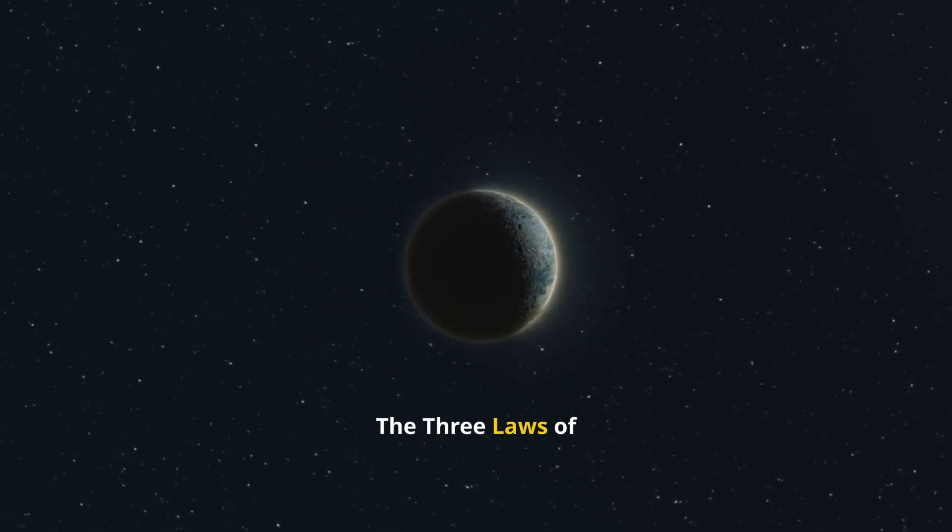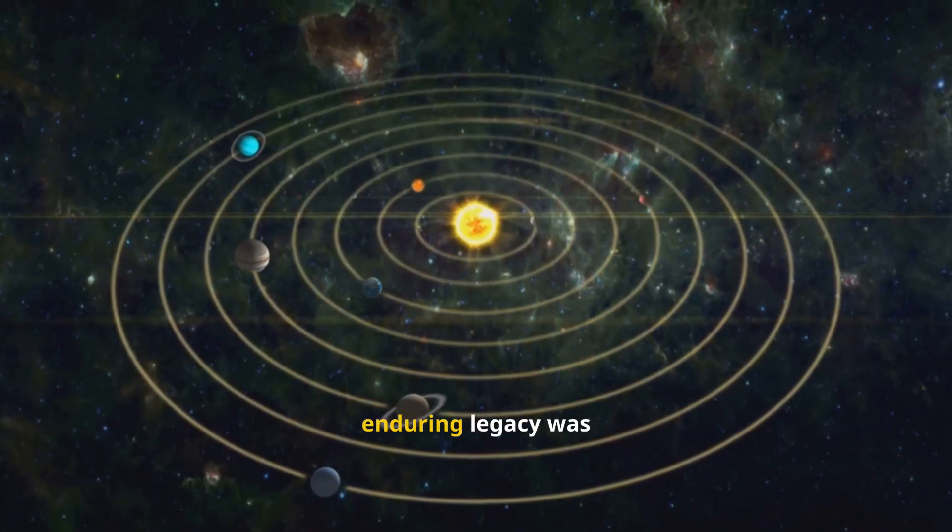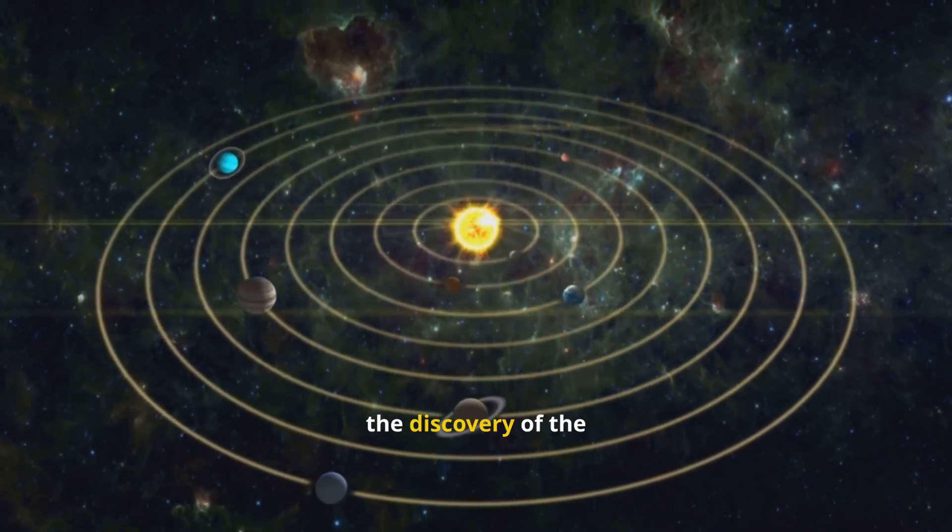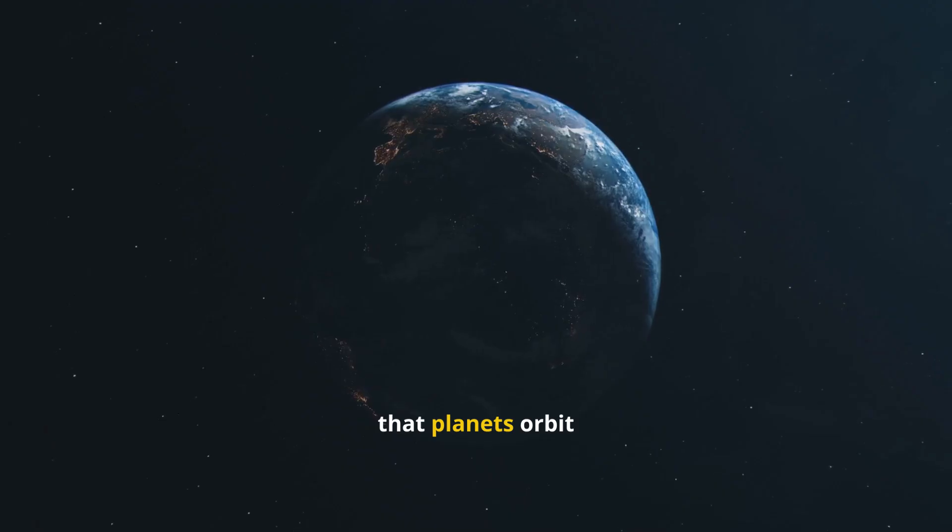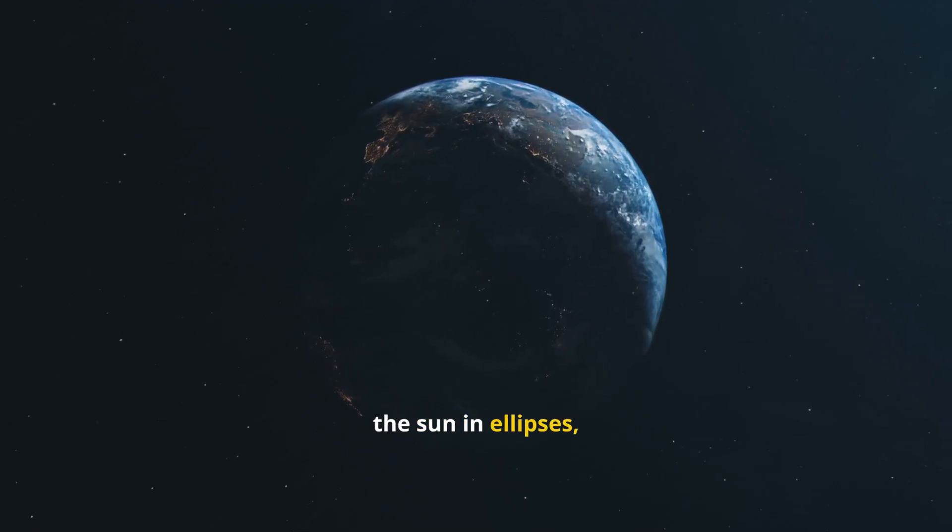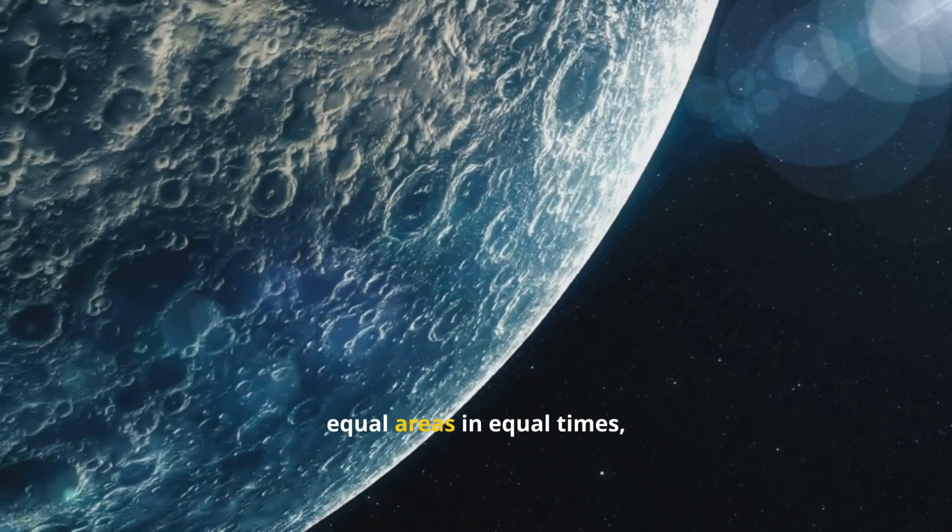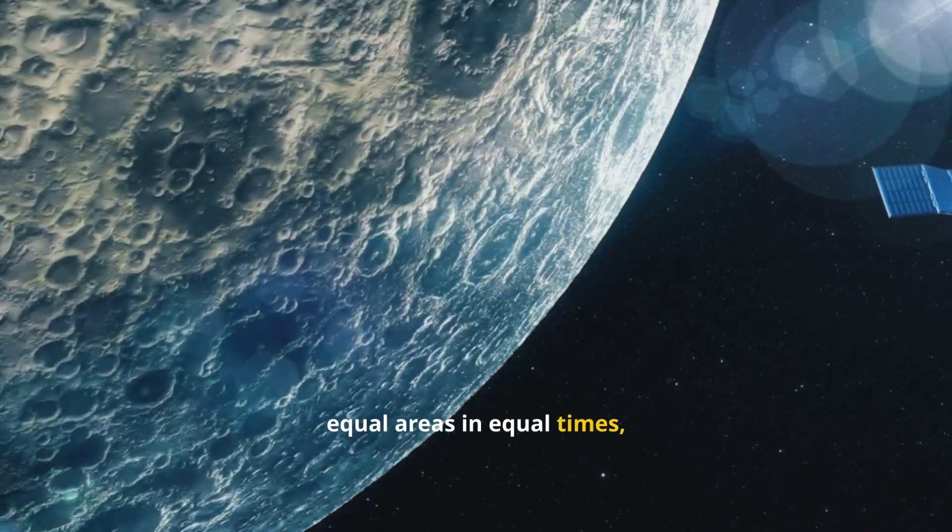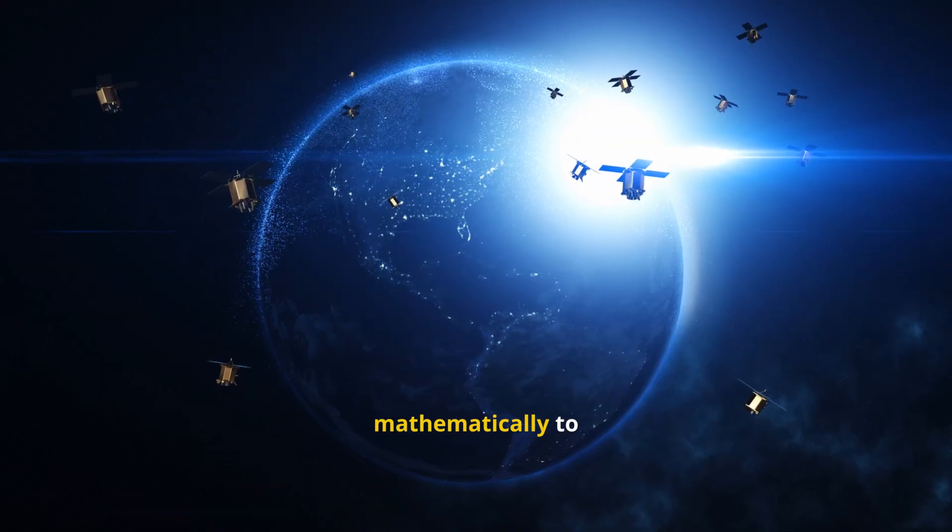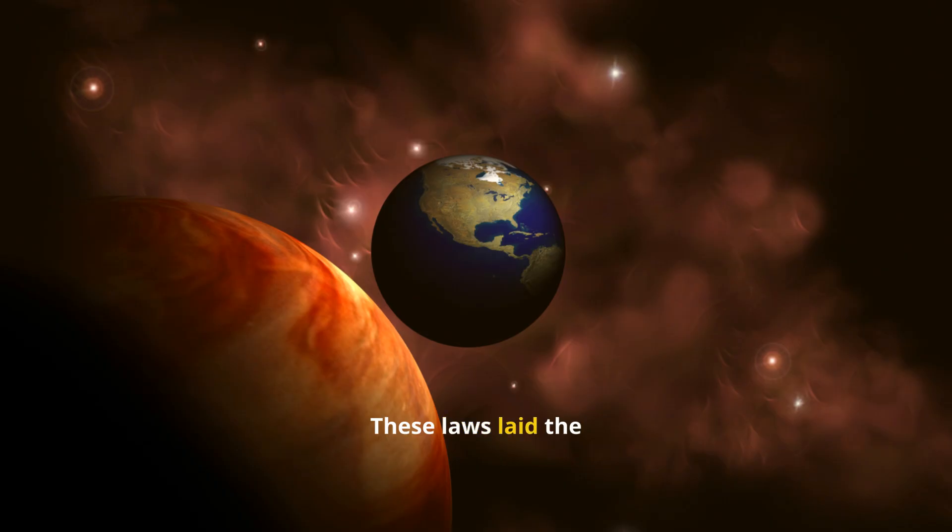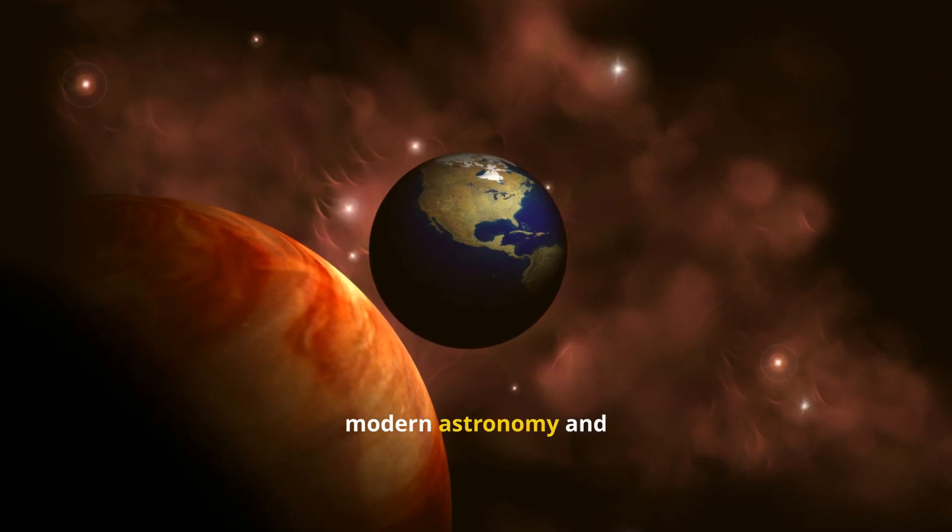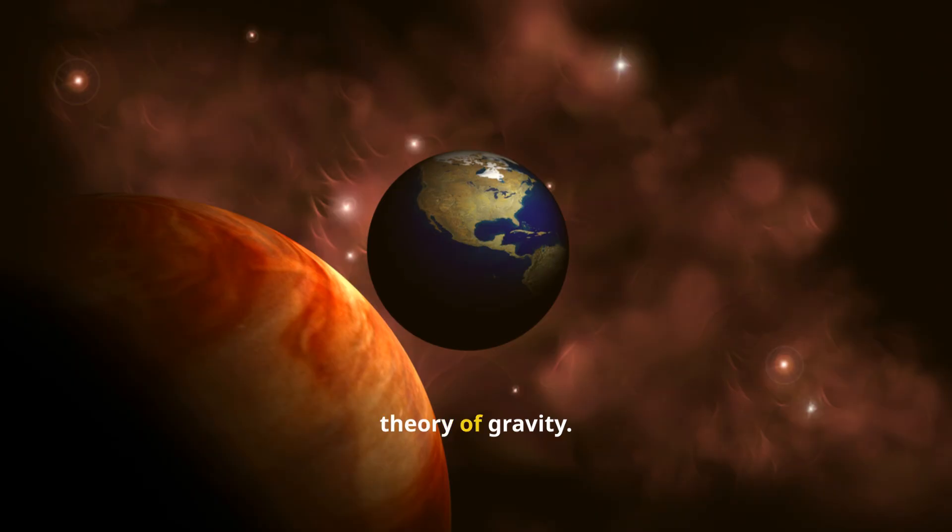The three laws of planetary motion. Kepler's most enduring legacy was the discovery of the three laws of planetary motion: that planets orbit the sun in ellipses, that they sweep out equal areas in equal times, and that their orbital periods relate mathematically to their distances from the sun. These laws laid the foundation for modern astronomy and influenced Newton's theory of gravity.